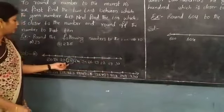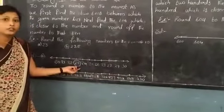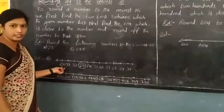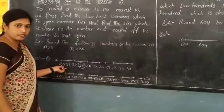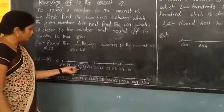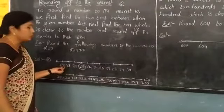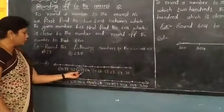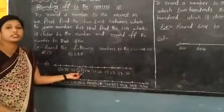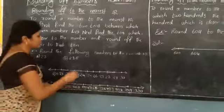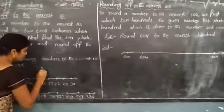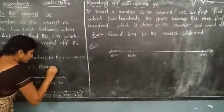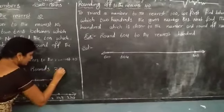So this 23 is closer to which 10? 20, right? It is closer to 20 than to 30. So this 23 rounds to 20.